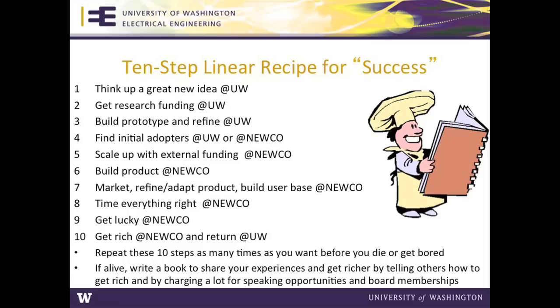Here is a quick way to get a company up and running, and we'll see whether this is really true or not. Notice I use the word linear - I'm an engineer. Things in life are typically not linear. But here's your 10-step linear recipe for success: Think of a great idea here at UW. Get research funding at UW. Build your prototype, refine it at UW. You have not lost any equity yet. Find initial adopters, maybe some company contacts here at UW. Start your new company. Now you scale up, talk to the VCs, angels. Start scaling up. Build your product, market your product, refine your product. Talk to customers. Very important - build user base. Time everything right. Get lucky. These are really important steps. Get rich and return back to UW. Any questions? And then repeat these steps as many times as you want before you die or you get bored.